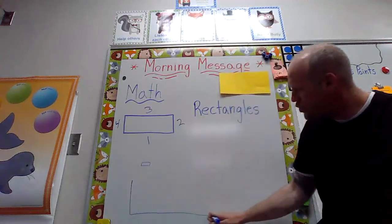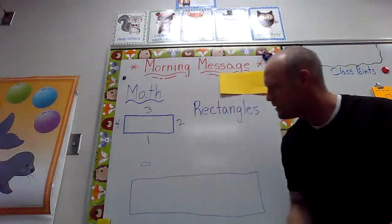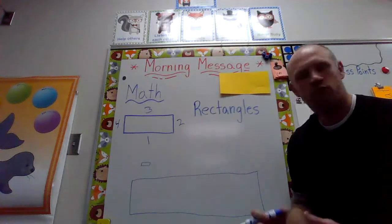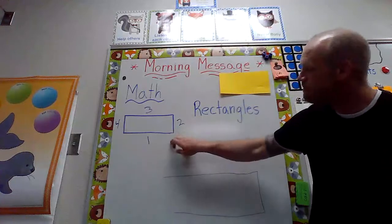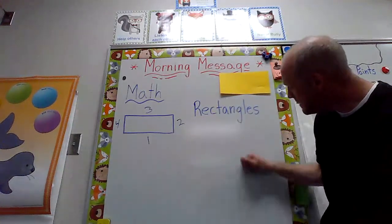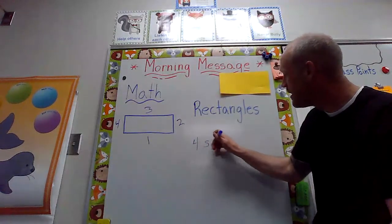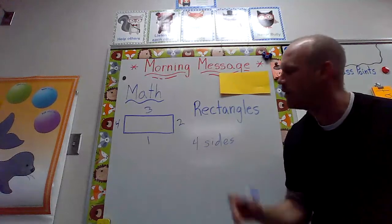But boys and girls, when we describe our shapes, we need to remember that we use those special words. So for this two-dimensional shape, our rectangle, it has four sides. Now how many corners does our rectangle have?